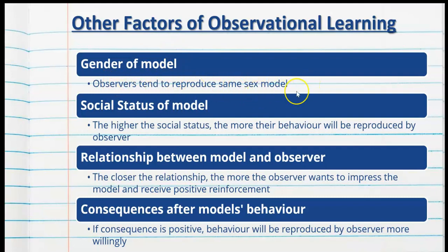This is also the case in the real world. The social status of the model is also important — the higher the social status, the more their behaviour will be reproduced by the observer. This is often why celebrities are very influential in observational learning. For example, a celebrity will start to wear a certain dress trend or style their hair a certain way, and many people will replicate the behaviour.